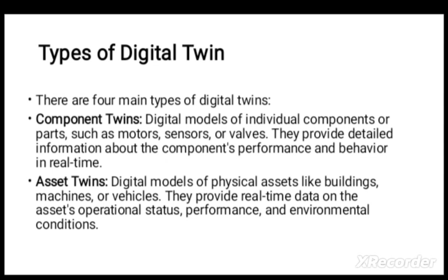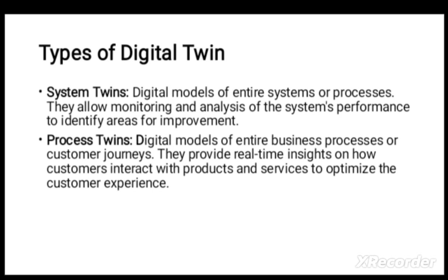Asset twins are digital models of physical assets like buildings, machines, and vehicles. They provide real-time data on the asset's operational status, performance, and environmental conditions. System twins are digital models of entire systems and processes, allowing monitoring and analysis of system performance to identify areas for improvement. Process twins are digital models of entire business processes or customer journeys; they provide real-time insight on how customers interact with products and services to optimize the customer experience.